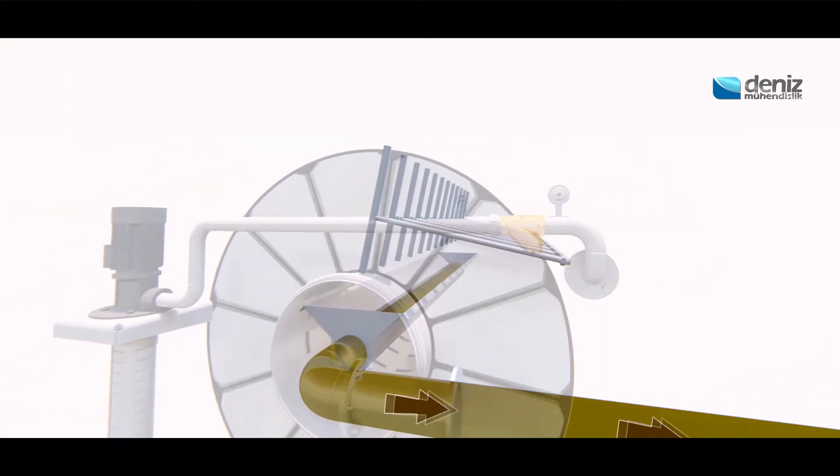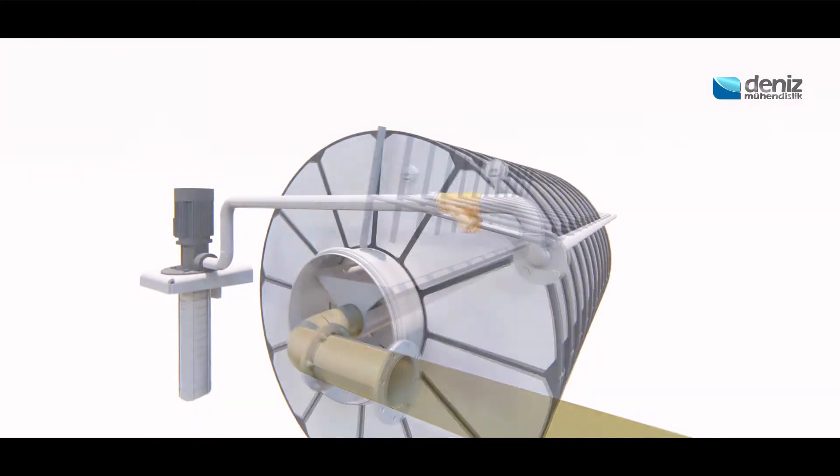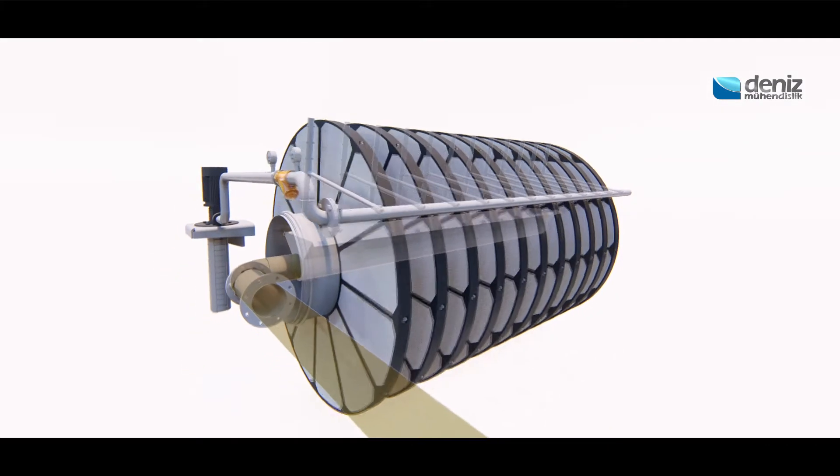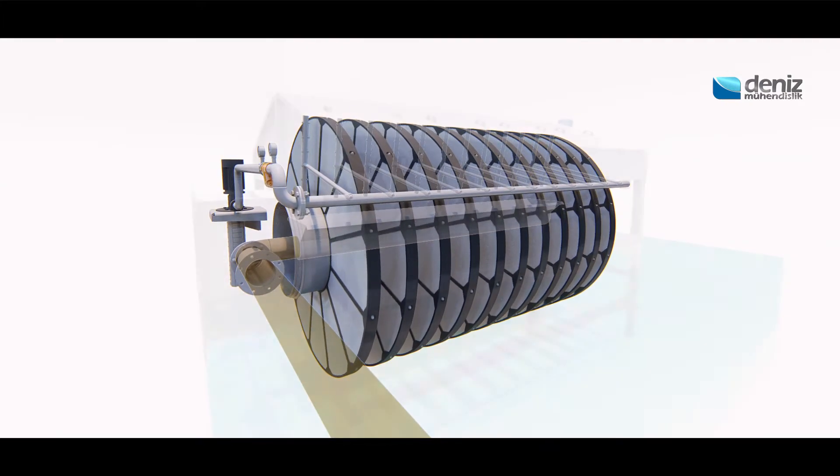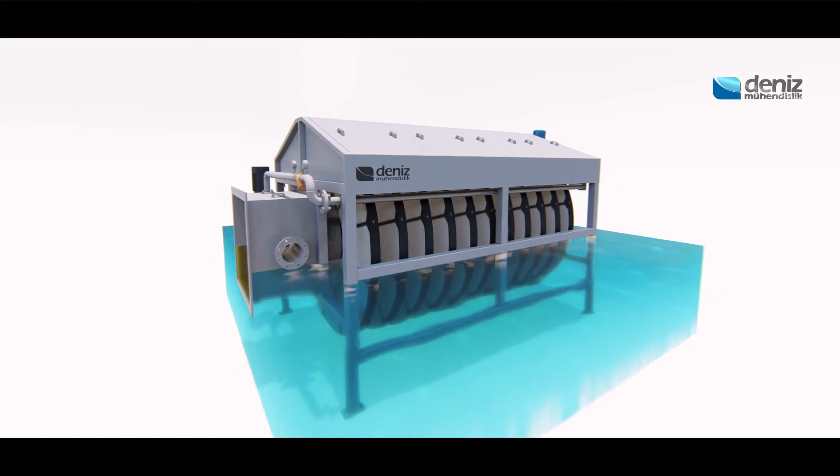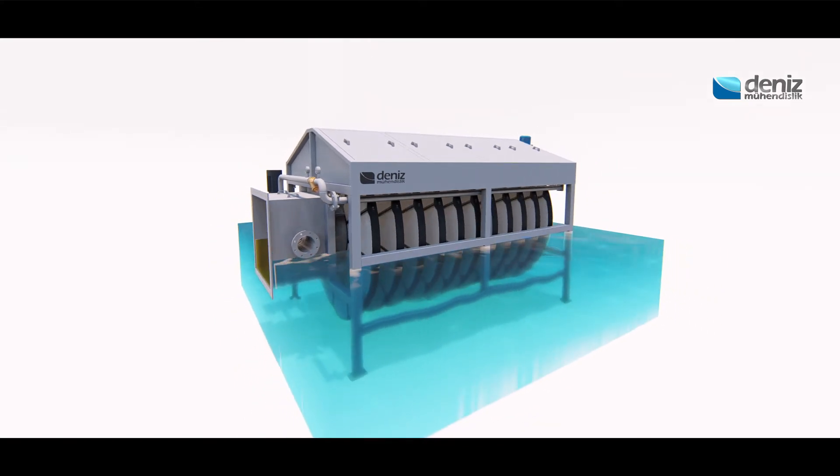The backwash water is collected in a fully isolated chamber in the main shaft and delivered to the discharge line. Filtered water is collected in the reservoir where the microdisk filter is located.